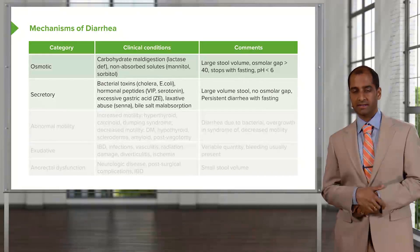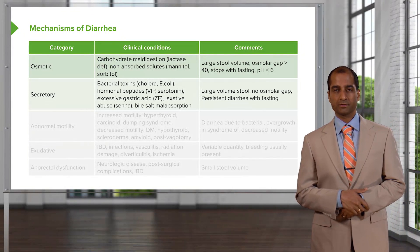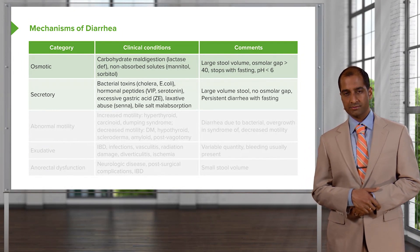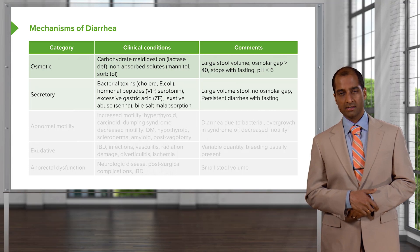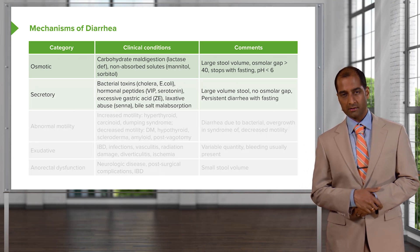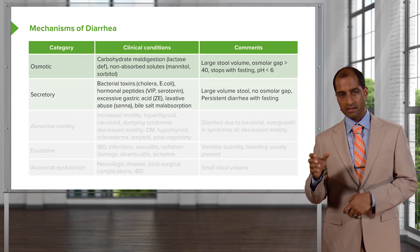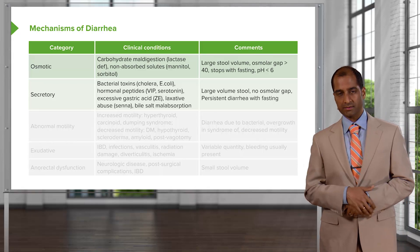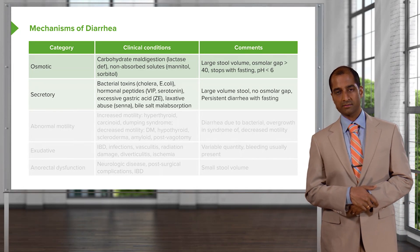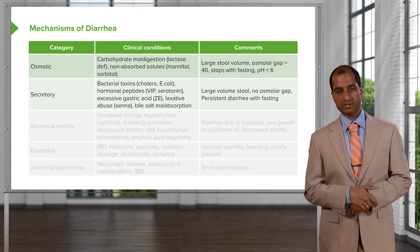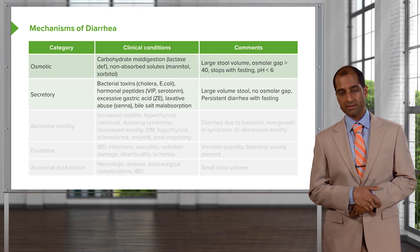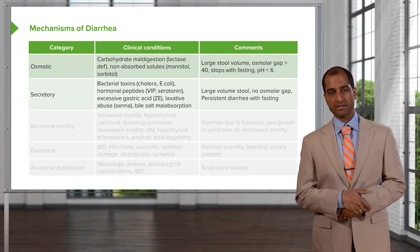Apart from tumors — including gastrinoma — that also produce secretory diarrhea, you can have certain organisms. For example, if you drink contaminated water containing the bacteria Vibrio cholerae, it works upon your intestinal cell. On the basolateral membrane, it causes ADP ribosylation, which then opens up chloride channels in the luminal membrane. The result? You've heard of rice water stools — this is a secretory type of diarrhea.